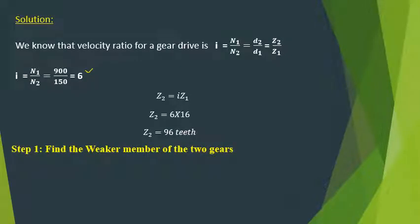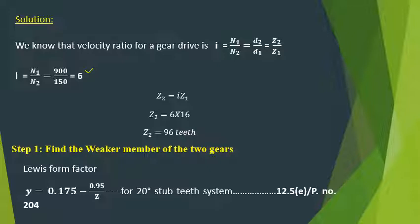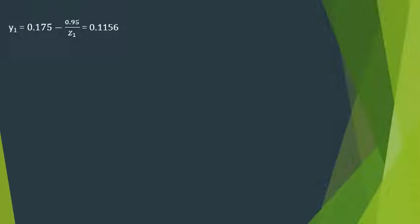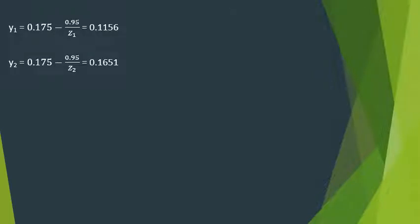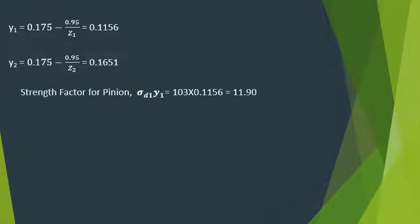The next step is to find the weaker member. Since stress values and materials differ, we find the Lewis form factor. For a 20-degree stub tooth profile from the design data book, equation 12.5E, page 204: y = 0.175 − 0.95/z. For the pinion: y1 = 0.175 − 0.95/16 = 0.1156. For the gear: y2 = 0.175 − 0.95/96 = 0.1651.